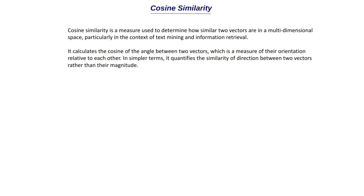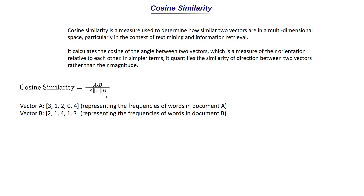If both vectors are oriented in the same direction, we can say they are related or similar to each other. The formula to calculate cosine similarity when you have two vectors a and b is: (a·b) / (|a| × |b|). We first calculate the dot product a·b, which gives a scalar, and then divide by the product of the magnitudes of a and b. The final value is called the cosine similarity score.